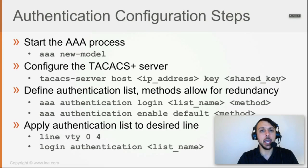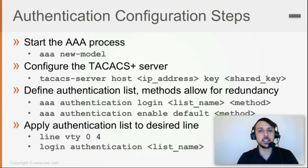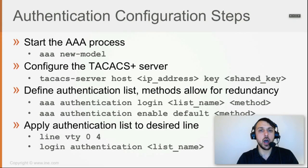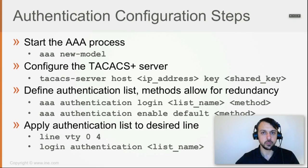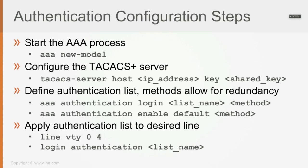If you say 'aaa authentication login default', that list defines how you want to authenticate login requests to the router. After the list name, you configure the method — in this case via TACACS+. The list name tells the router whether authentication is applied by default, and the method tells the router how to authenticate users. The method can be TACACS+, RADIUS, local, or multiple methods configured for fallback. If you use the default list, all VTY access will be enforced to authenticate as defined — you don't have to manually apply it anywhere.